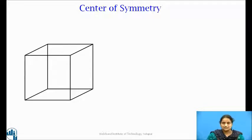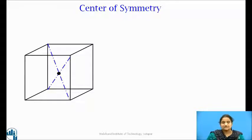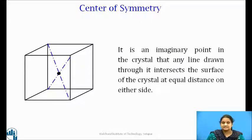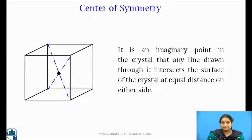Consider a cube as shown in the figure. If the body-centered point is considered and the body diagonals are drawn through it, each diagonal connects identical lattice points located at equal distances and in opposite directions from this point. This point acts as a point mirror which generates the second lattice at an equal distance in the opposite direction. Therefore, this point is called the center of symmetry or inversion point. Center of symmetry is defined as an imaginary point in the crystal such that any line drawn through it intersects the surface of the crystal at equal distance on either side. It is equivalent to reflection through a point. For a cubic crystal, the inversion point is located at the center.